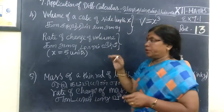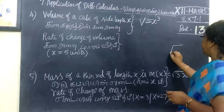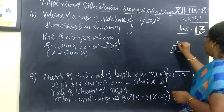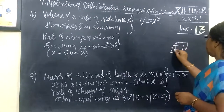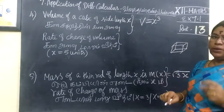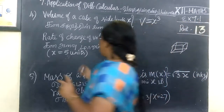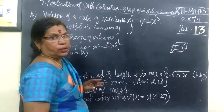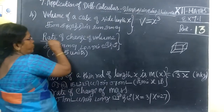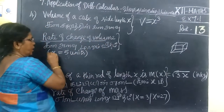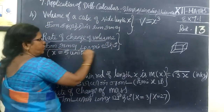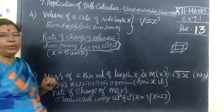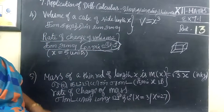One cube is given and the volume is changing. We are going to find the rate of change of volume. Because the volume is x cubed, we need to find dV/dt.